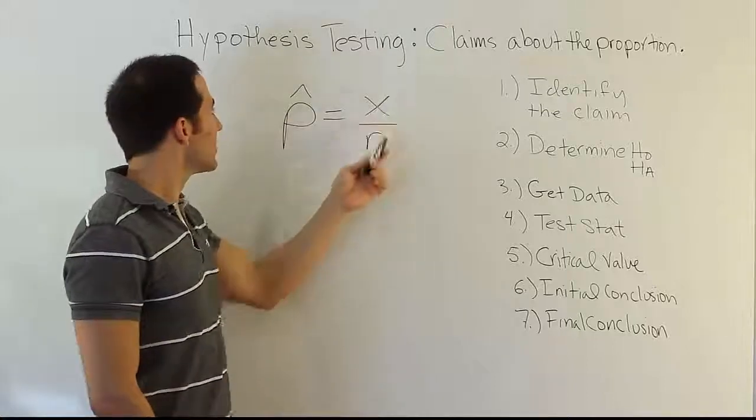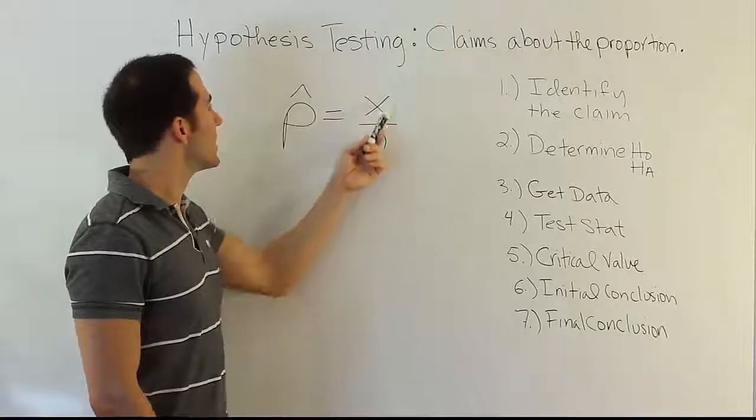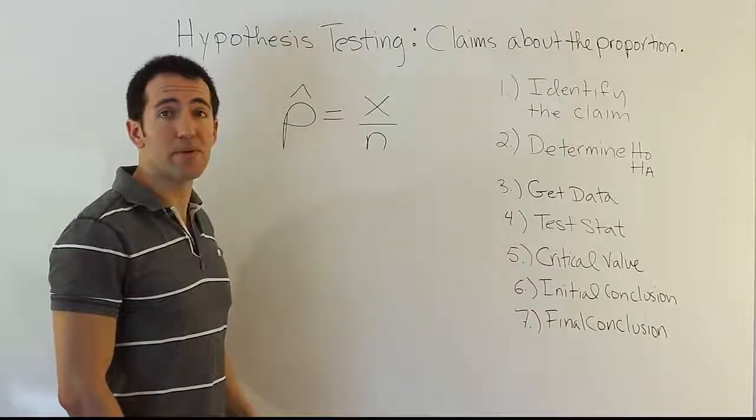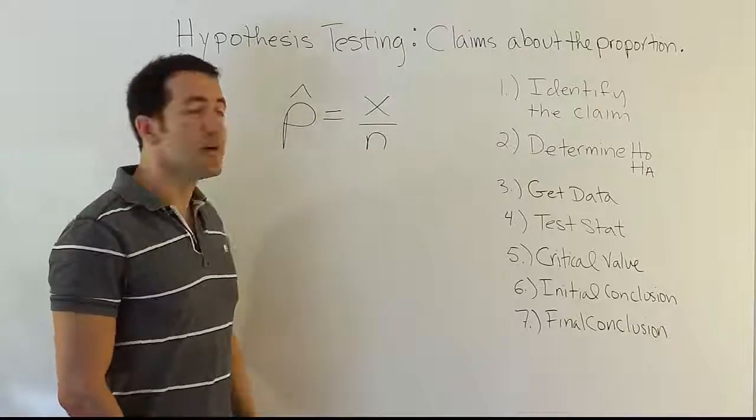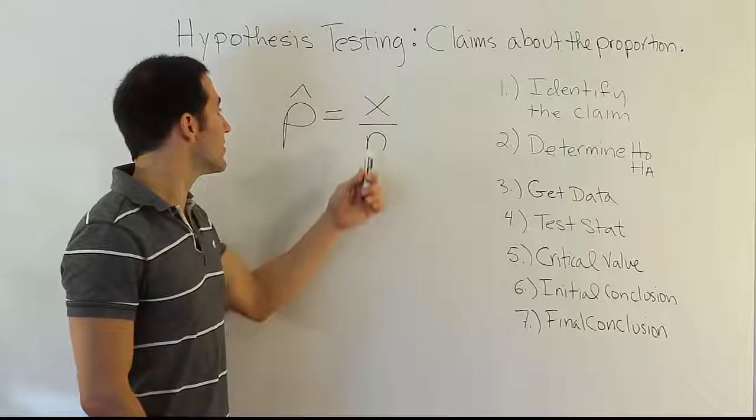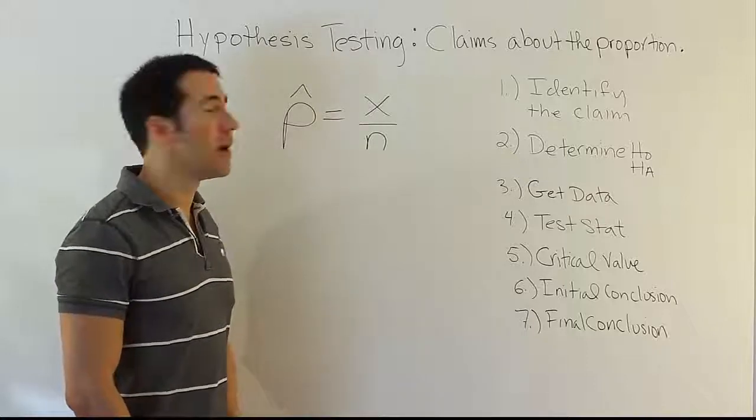It's defined as x over n, where essentially x is a binomial random variable. That's a key point, that it's binomial in nature. And x represents the number of subjects having the trait you're looking for or interested in, and n is the total number of subjects surveyed in the problem.